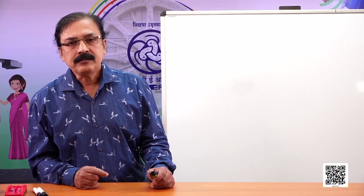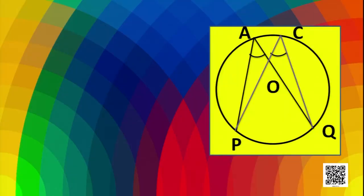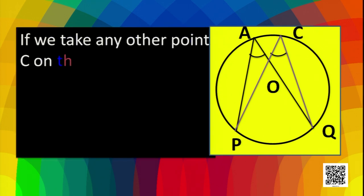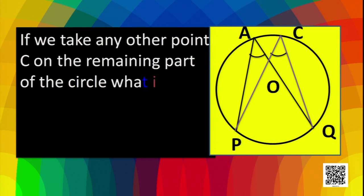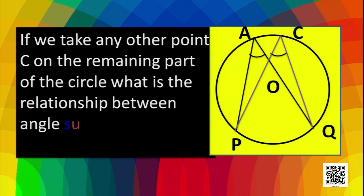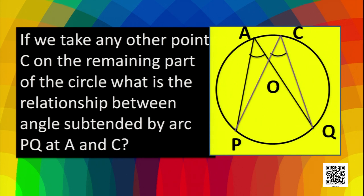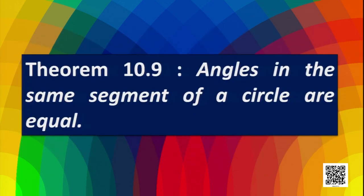Now, in this figure, apart from A, we have another point C on the same segment. What about the angle subtended by the minor arc PQ at the remaining part of the circle? If we take any other point C on the remaining part, what is the relationship between the angles subtended by arc PQ at A and at C? This relationship is stated by another theorem: angles in the same segment of a circle are equal.